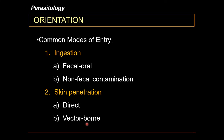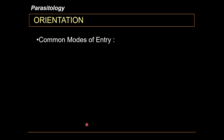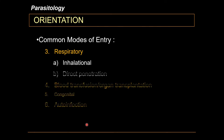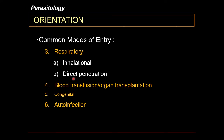Vector-borne skin penetration refers to parasitic infection through a third party. The most important example is the transmission of malaria through mosquito bites, similar to dengue infections. Another mode of entry is the respiratory route, where you accidentally or intentionally inhale the infective stage of some parasites, or through direct penetration of the nasal and oral mucosa.